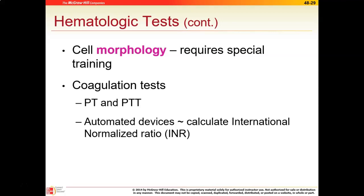Briefly, coagulation tests are frequently done as well. When patients have certain heart conditions, they have to take anticoagulant medication, and so they frequently have to come in for tests called PT and PTT. These are done monthly in order to evaluate whether the individual is taking the appropriate amount of anticoagulants. We'll talk more about that in phlebotomy.